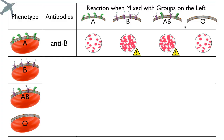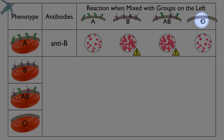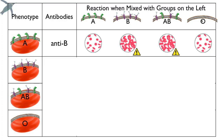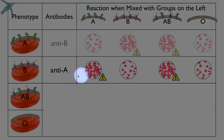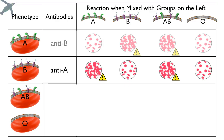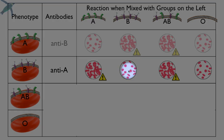Now why can you transfuse an A person with O blood? The answer hopefully makes sense to you now — O is the plain donut. It doesn't have any antigens, so you don't make antibodies against it. O blood is perfectly fine. What about B blood? The person that has B antigens is sensitive to and makes antibodies against A antigens. So if you have a B patient and you transfuse A blood, not good — you're going to get clumping. A B person with B blood is obviously okay. That's their blood type.